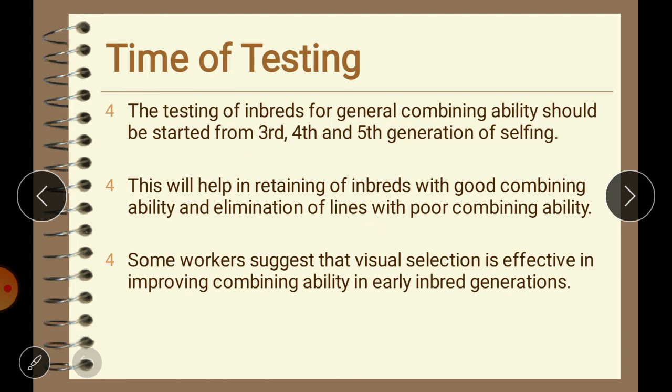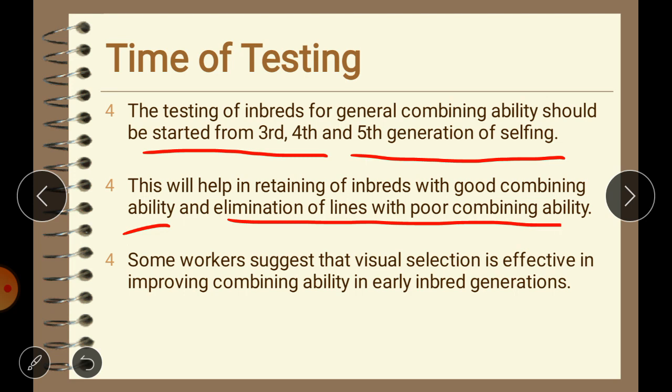Regarding the time of testing, testing of inbreds for general combining ability should be started from the third, fourth, and fifth generation of selfing. Starting testing from the third generation onwards helps in retaining inbreds with good combining ability and eliminating lines with poor combining ability. Some workers suggest that visual selection is effective in improving combining ability in early inbred generations.